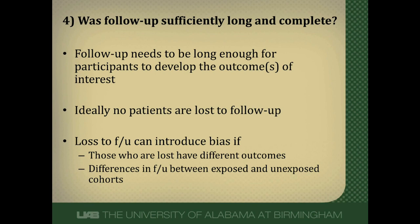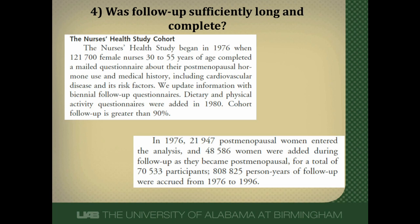How did the Nurses' Health Study do? Pause the video, read these two excerpts, and see if you think follow-up was sufficiently long and complete. Follow-up in the Nurses' Health Study was greater than 90%, so they lost about 10% — pretty good for such a large cohort followed for such a long period across the entire United States. They followed people for about 20 years. Is 20 years long enough to see cardiovascular disease? The average age of menopause is around 50, so 20 years brings women to around age 70 — we would expect cardiovascular disease to manifest in that period. The Nurses' Health Study meets this criterion.